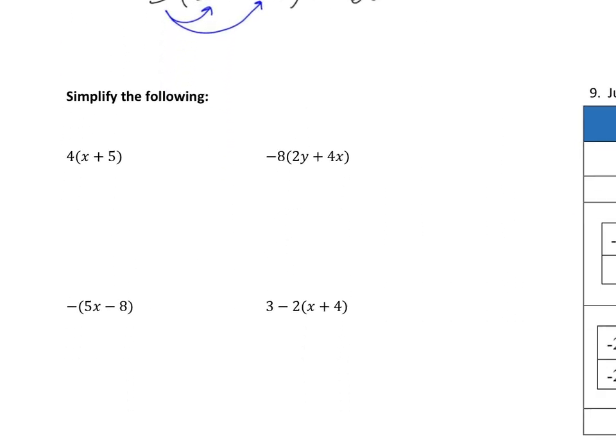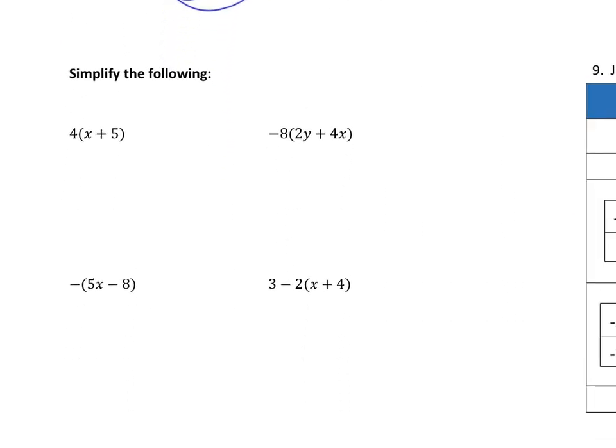So let's practice simplifying some of these equations. Now again, when you see a number in front of parentheses, that's what you're going to distribute. So if we do this, we go pew pew. We're distributing that four into the parentheses. This is always multiplication. Four times x is 4x. And four times five is 20. These two things are not like terms. So I'm going to be stopping right there because I cannot combine them together anymore.